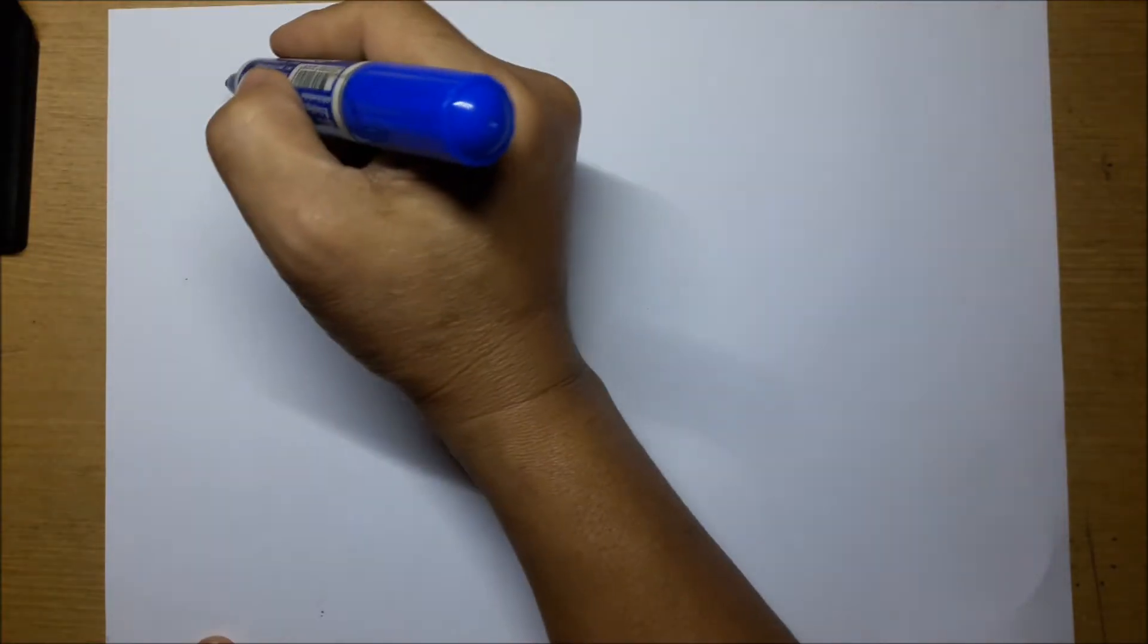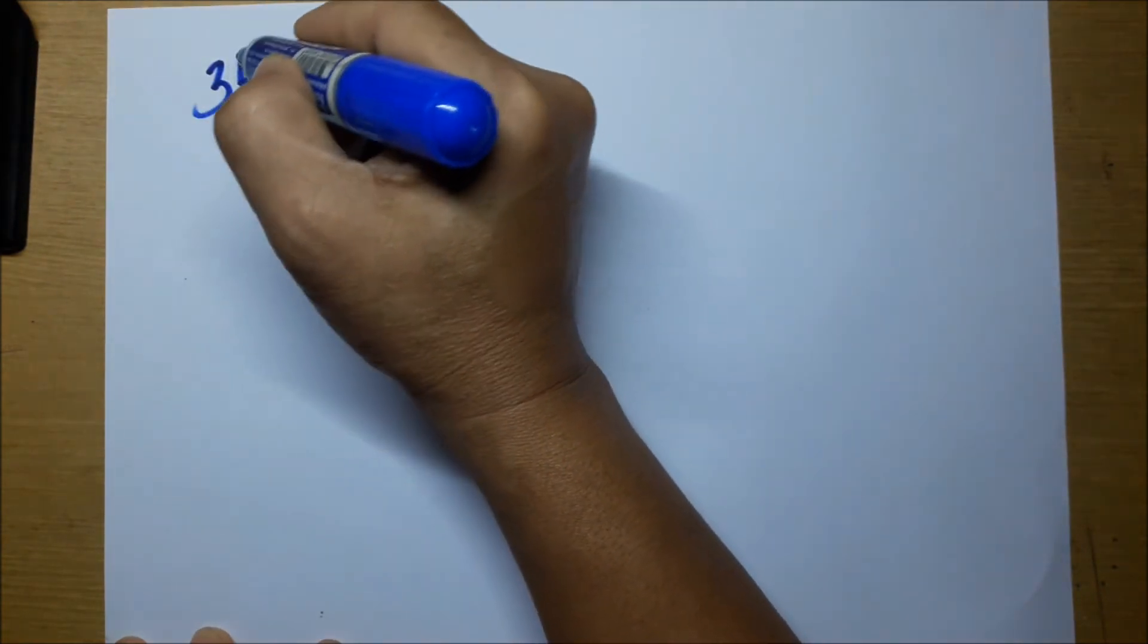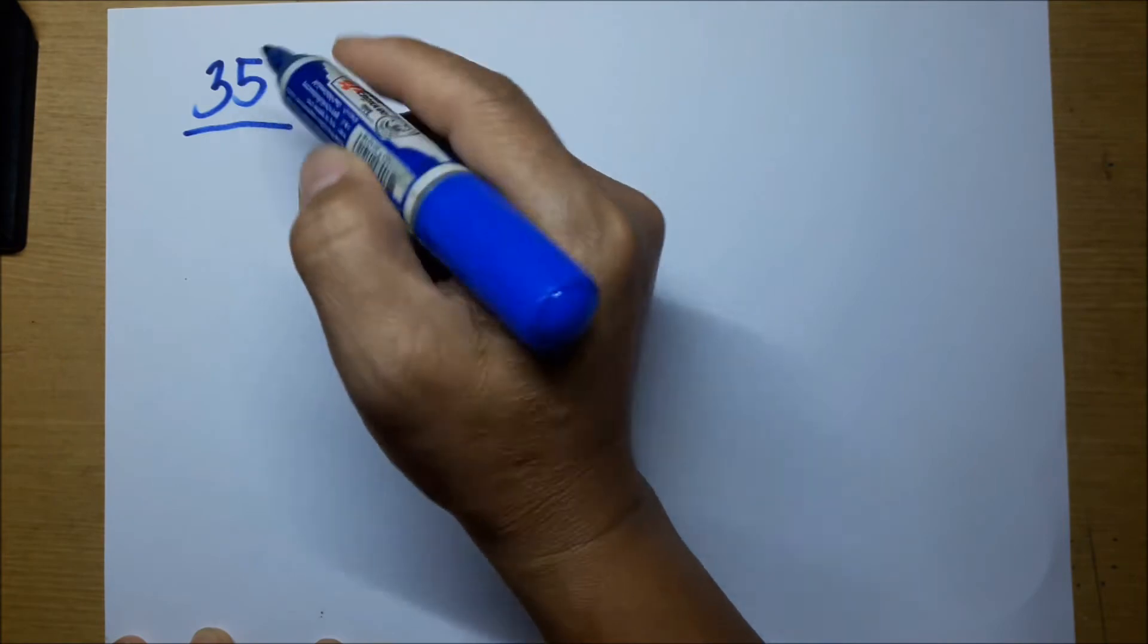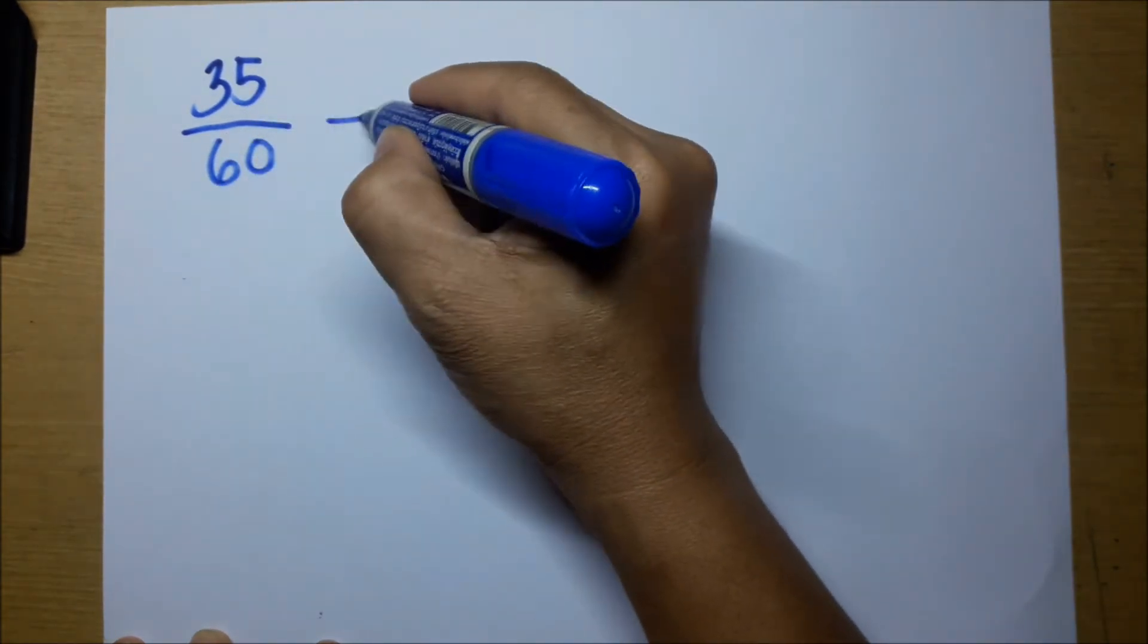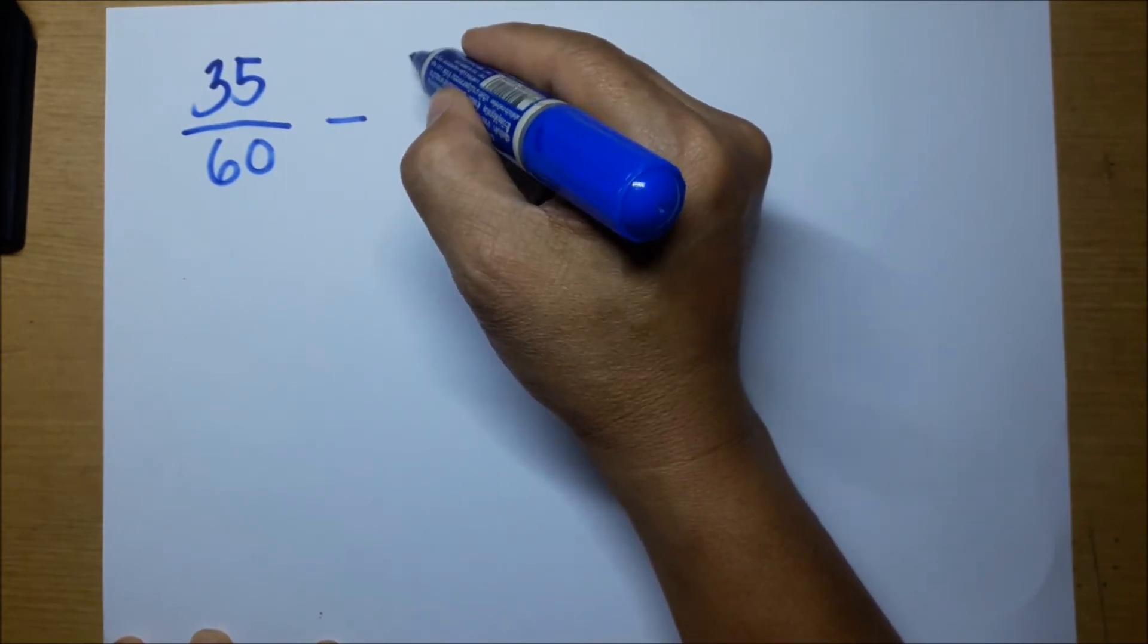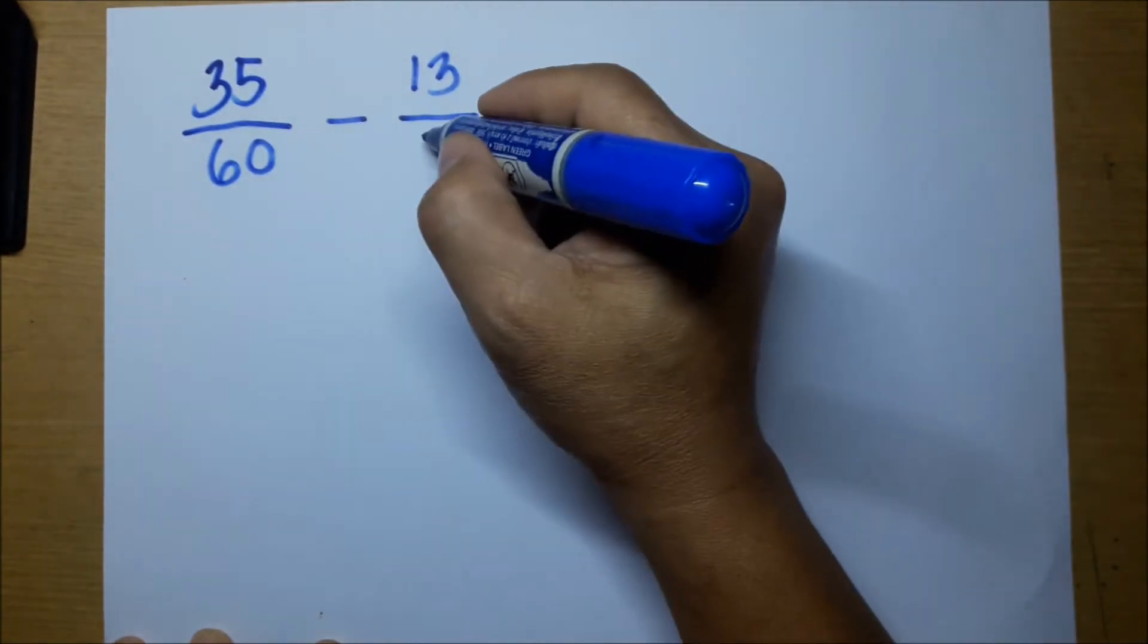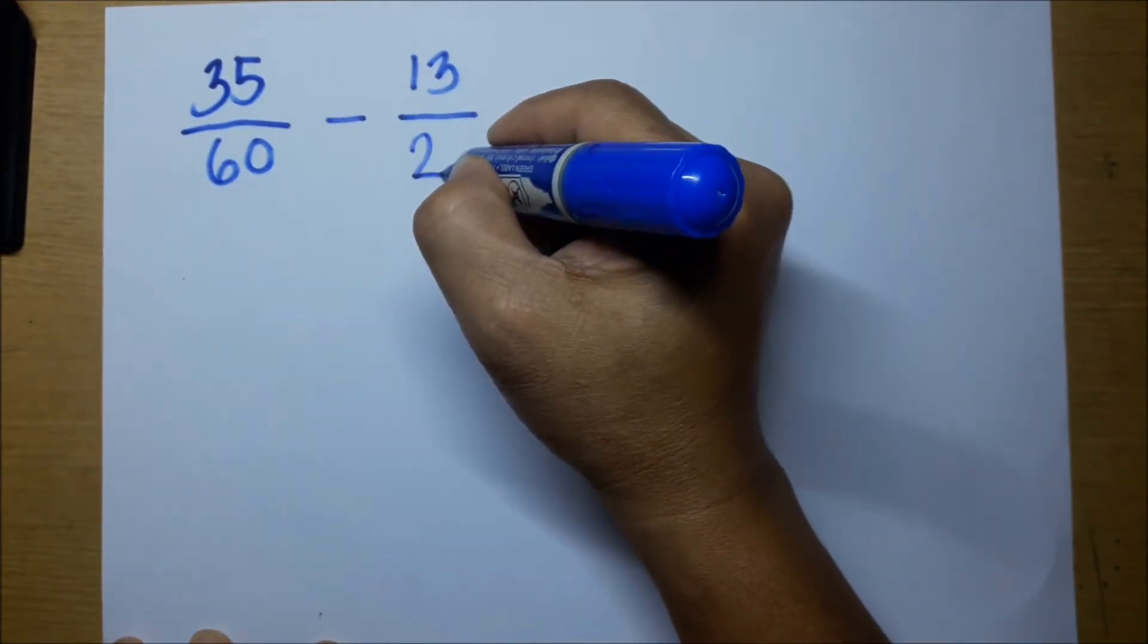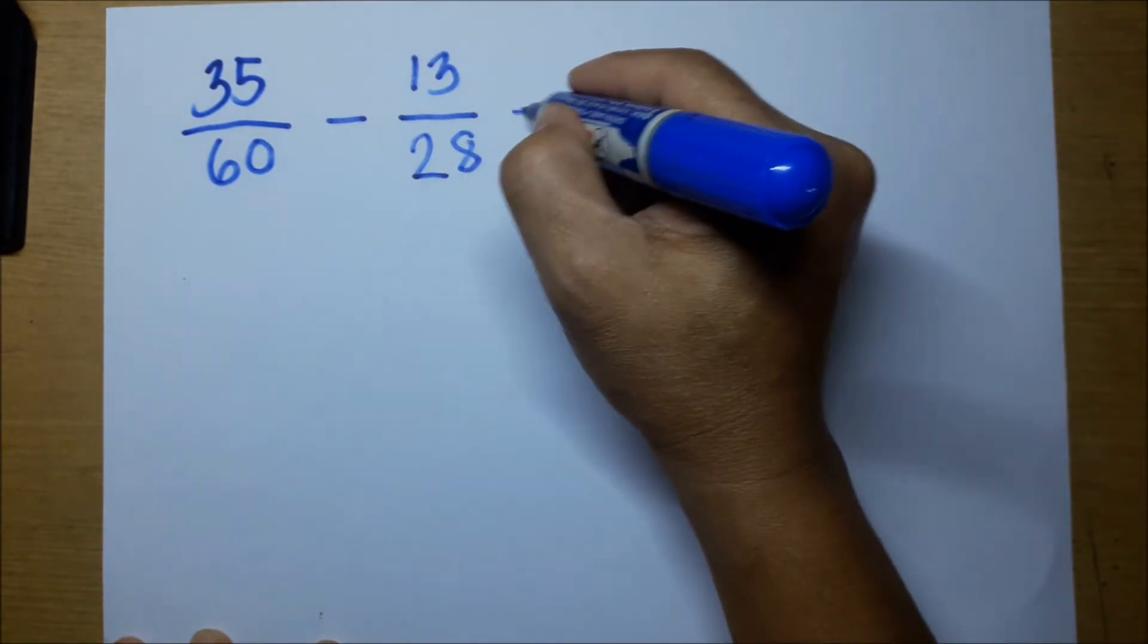For example, you have 35 over 60 minus, let's say, 13 over 28 equals...